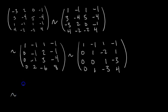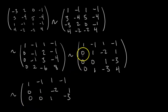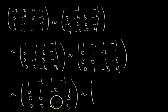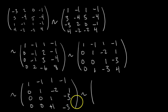Continuing with row 4 = row 4 minus row 2, we get the next intermediate matrix. At this point, if we scale row 4 by negative 1, it becomes identical to row 3. So we can do row 4 = row 4 minus row 3, and since they're the same, row 4 becomes all zeros. Now we have the matrix with a row of all zeros at the bottom — this is the row of all zeros I mentioned earlier.